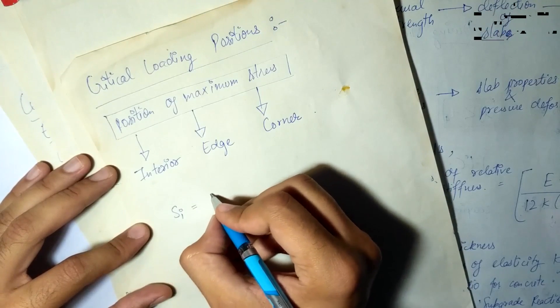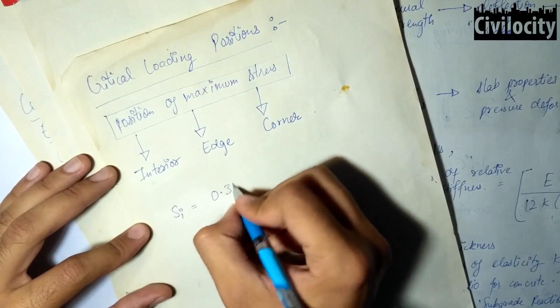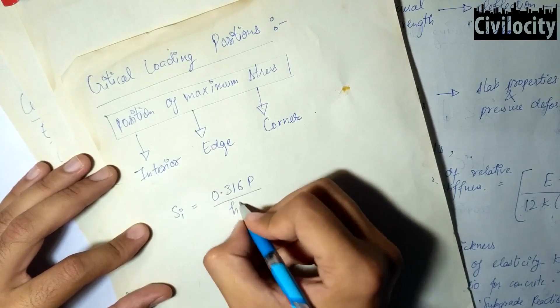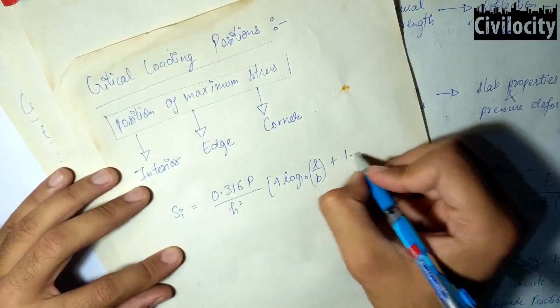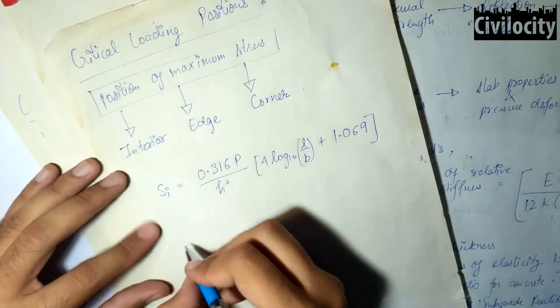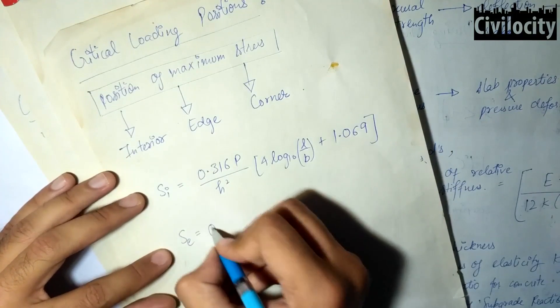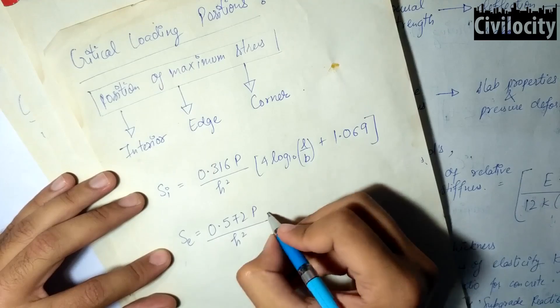The stress due to interior loading is equal to 0.316p divided by h squared times 4 log 10 L by B plus 1.069.